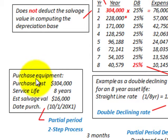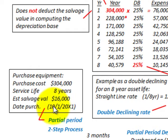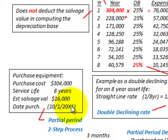We have purchased equipment with a purchase cost of $304,000, a service life of 8 years, an estimated salvage value of $16,000, and a date of purchase of October 1, 20x1. So we have a partial period to account for, since our company operates on a fiscal year from January 1st to December 31st each year.